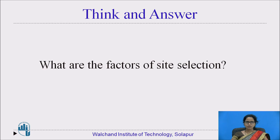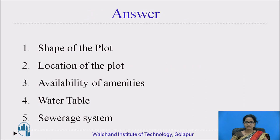You can pause the video for two minutes and try to answer: what are the factors of site selection? The answer is: the shape of the plot, the location of the plot, availability of amenities, water table, and the sewerage system.